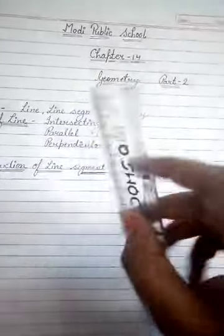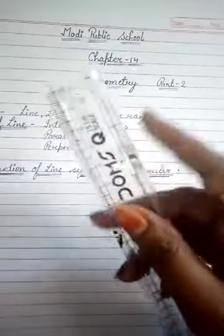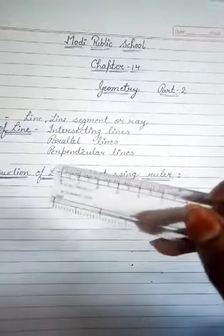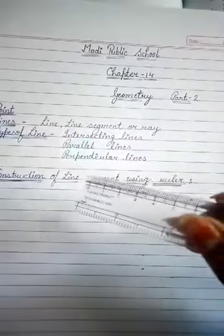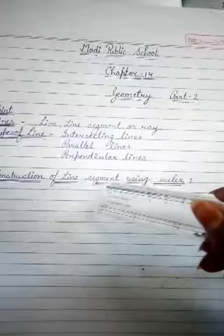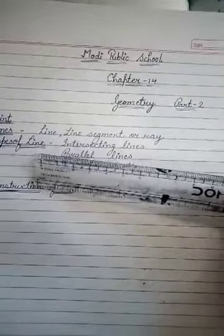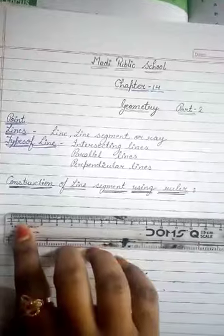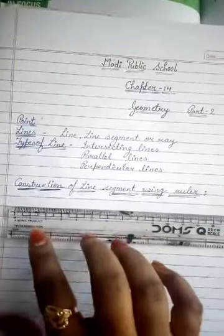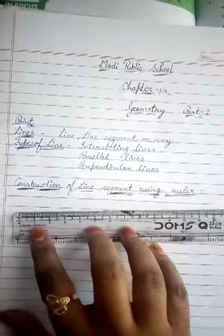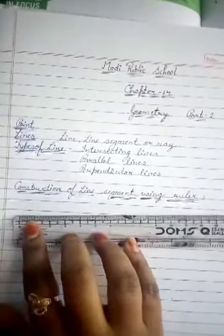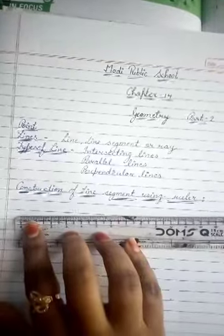You all have seen this instrument — you call it a scale, it is also known as a ruler. We use this ruler to draw line segments. We all know that a line segment has a fixed length. This ruler is marked in centimetres and the total length is 15 centimetres. We can use it to draw line segments in centimetres. The small partitions here are millimetres.